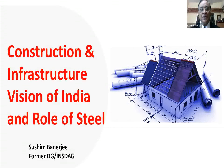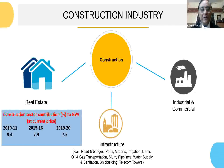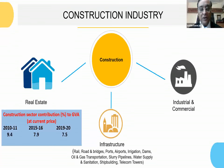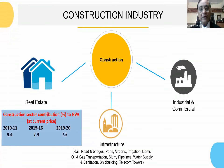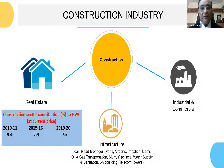If you see the construction industry, it is basically composed of real estate, industrial and commercial, and the most prominent one is the infrastructure construction. It consists of rail, roads and bridges, ports, airports, irrigation, dams, oil and gas transportation and all others. The construction industry has a very prominent role in the gross value added of the Indian economy, having an average share of between 7.5 to 8% in the last one decade.